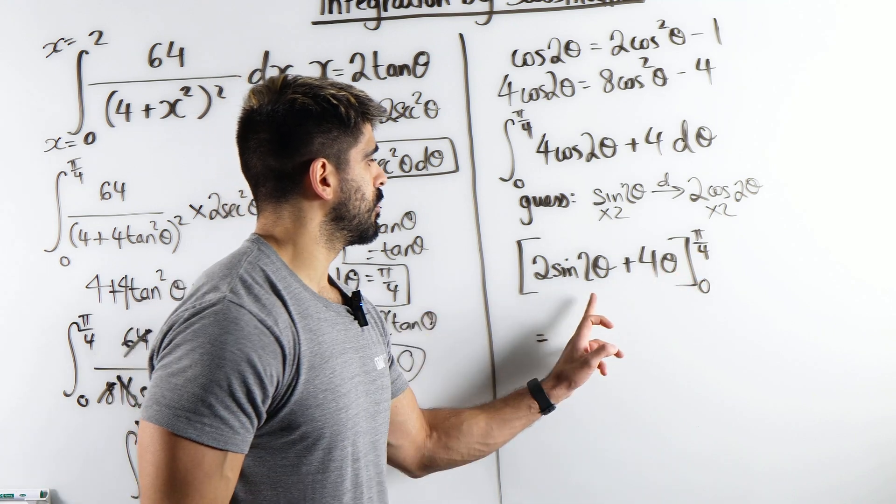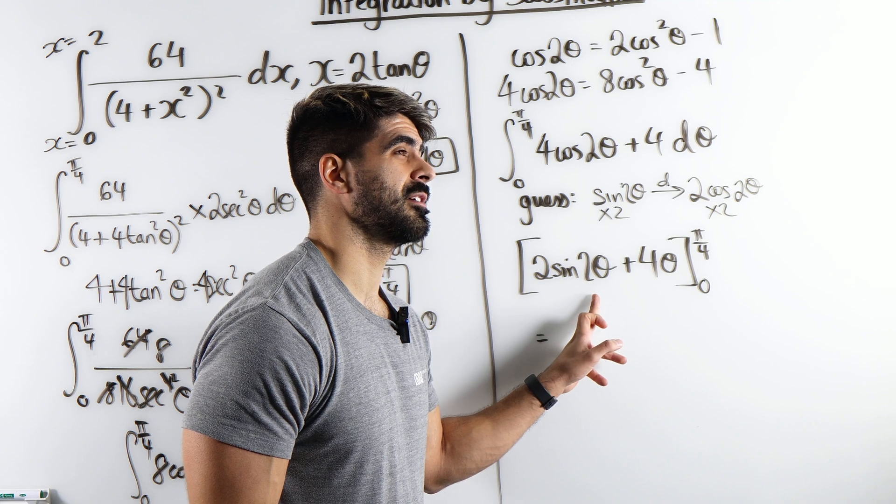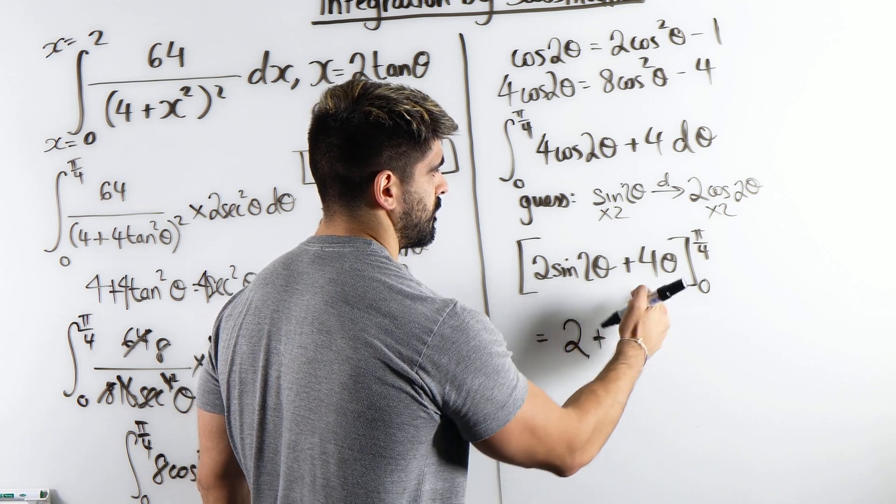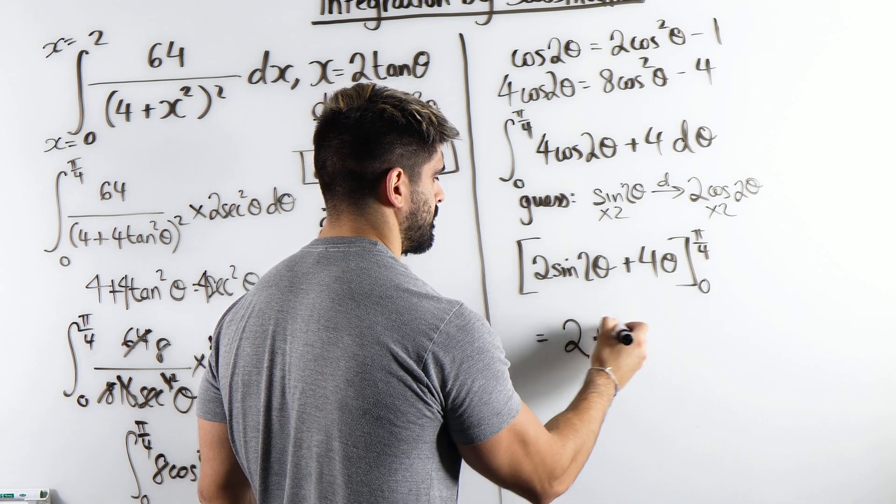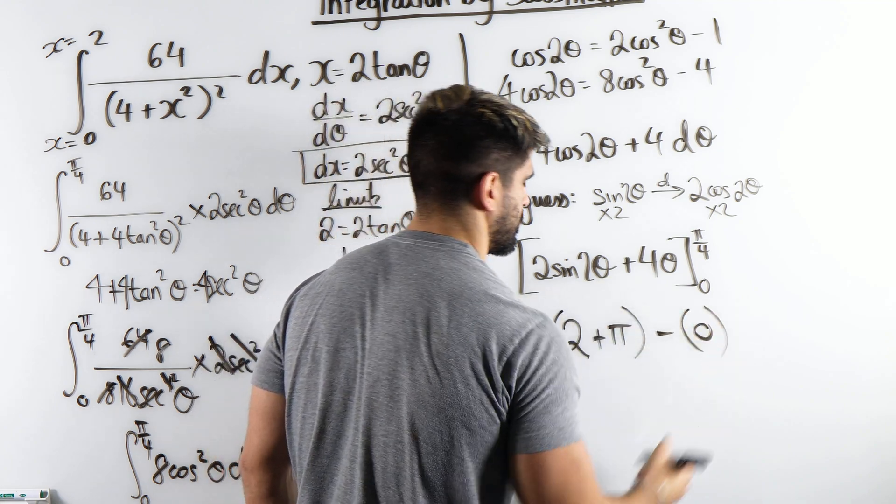Subbing in pi over 4, 2 pi over 2, sine of that is 1 times 2, 2. Plus 4 lots of that is just pi. Minus. Now when you sub in 0 there, it's just 0. So there's the answer.